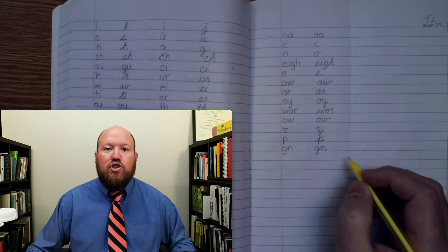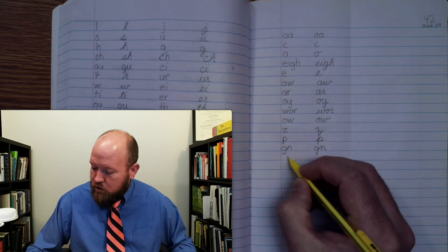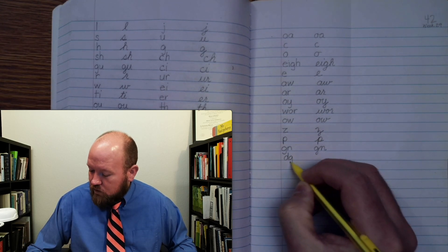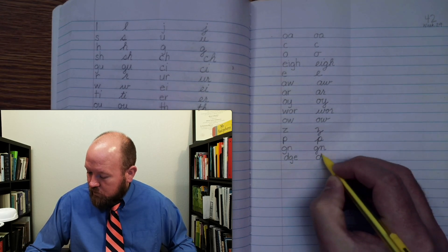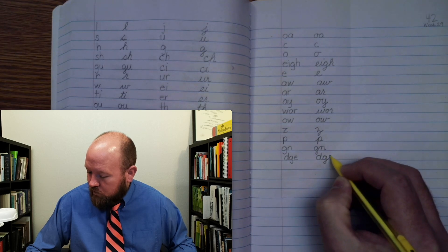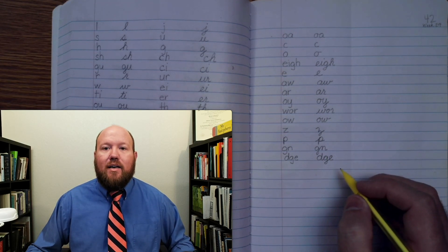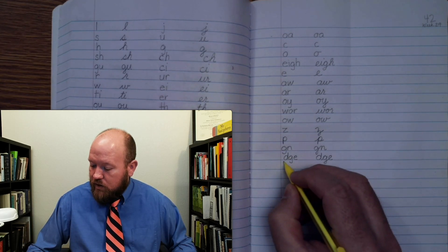Next one: jh, three letters. jh, three letters. Next one: kuh. kuh.